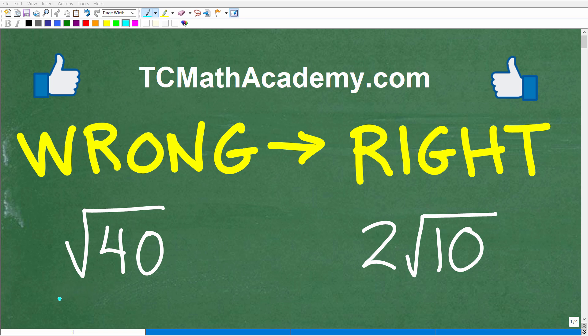In mathematics, we never want to leave a square root answer in this form. So here we have the square root of 40. The correct way to simplify this number is 2 times the square root of 10. So this would be considered wrong, and this would be considered right.